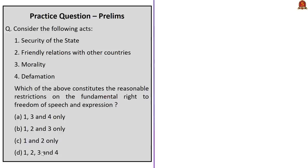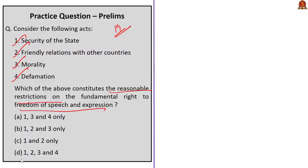Next question asks which of the following constitutes reasonable restrictions on the fundamental right to freedom of speech and expression under Article 19. Options: security of the state — yes; friendly relations with other countries — yes; morality — yes; defamation — yes. All four are correct reasonable restrictions. So the correct answer is option D: all of the above.